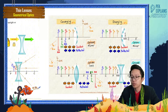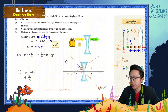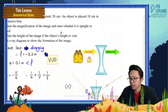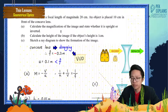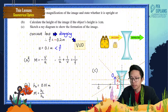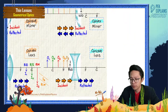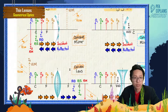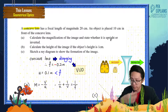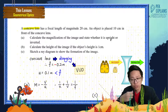The question asks whether the image is upright or inverted. Since it's a concave lens giving virtual, upright, diminished image, the answer is: this image is upright. We also know it is a virtual image.